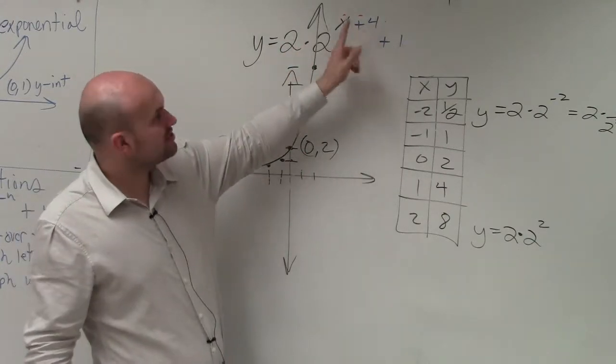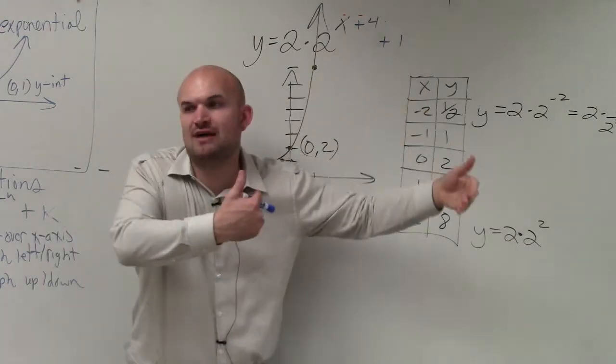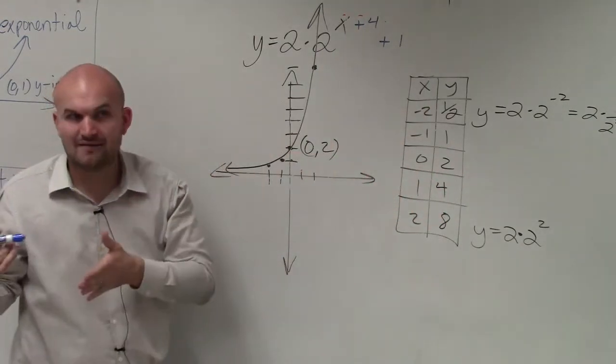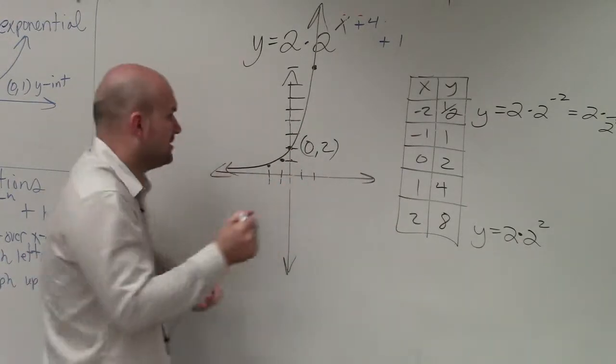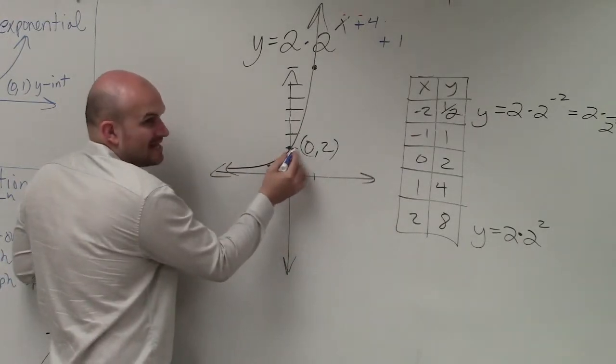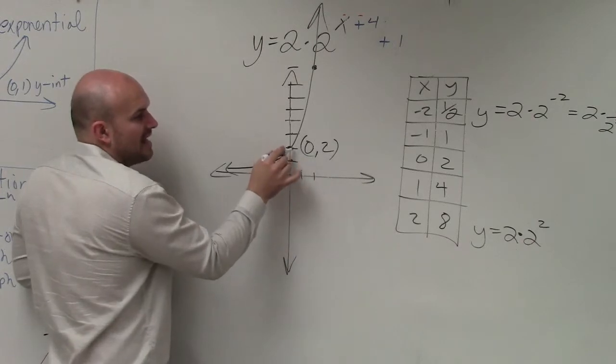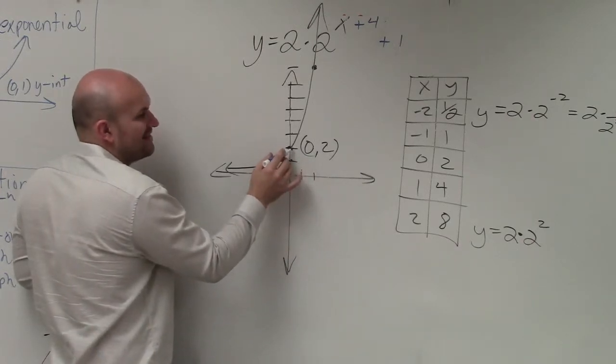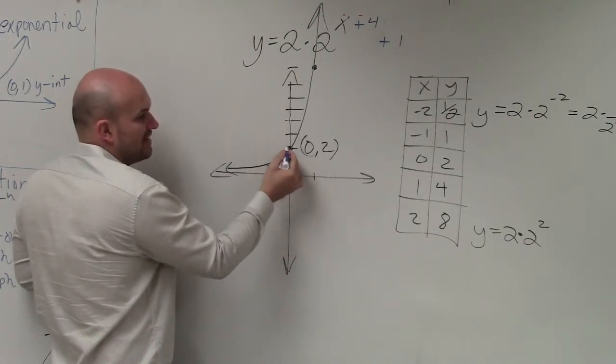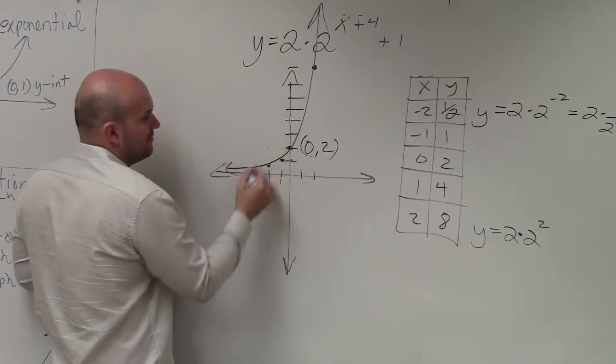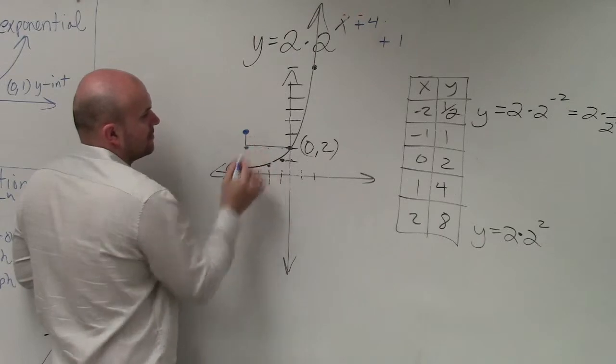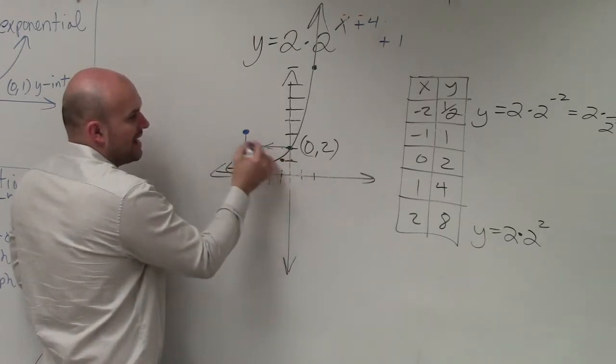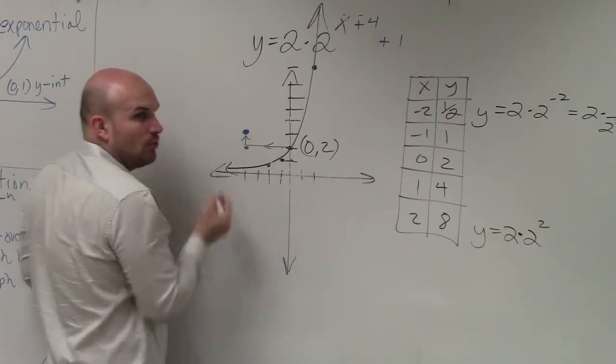So now we apply the transformations. Plus 4 is going to tell us to shift this graph 4 units to the left, and plus 1 is going to tell us to shift this graph 1 unit up. I always like to start with the y-axis or y-intercept. I'm going to go 4 units to the left - 1, 2, 3, 4 - and then I'm going to go 1 unit up. You can see how this point has now been moved 4 units left, 1 unit up.